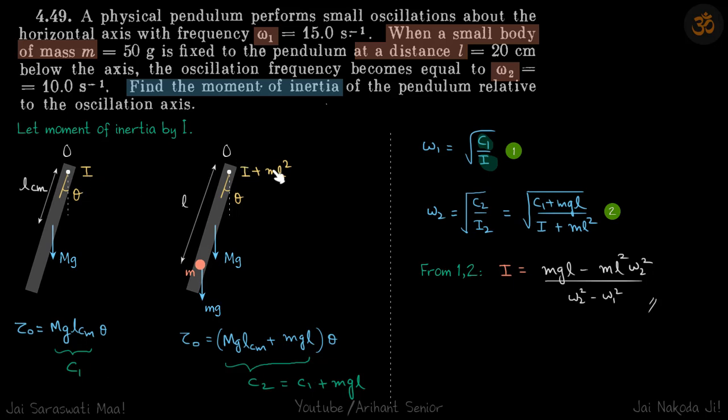Initially here the moment of inertia is I, here it is I plus ml square. It's twisted by an angle theta, so torque about O is mg sine theta, because this angle will also be theta, into LCM. And here it will be mg LCM theta, that will be the same, plus mg sine theta into l, mg l into theta.